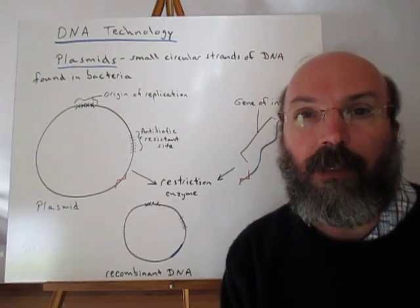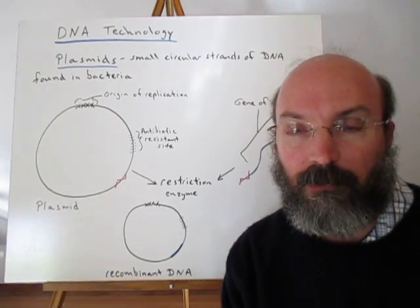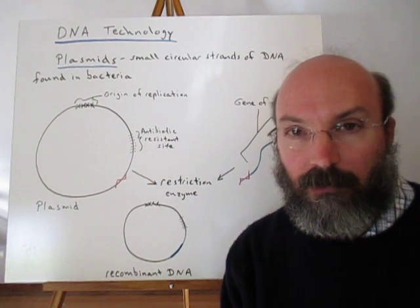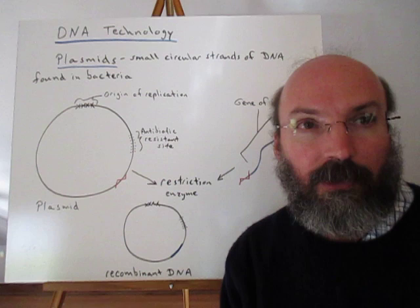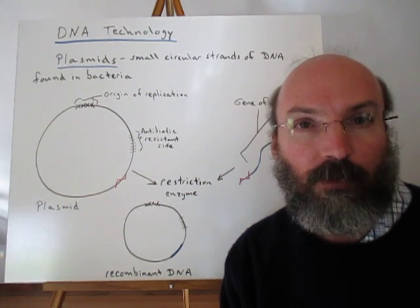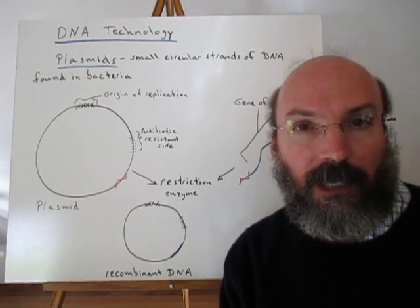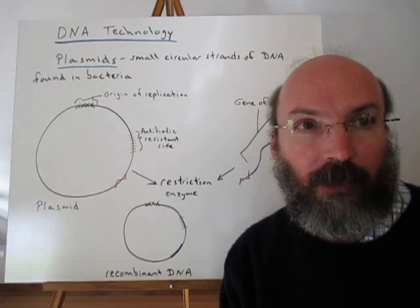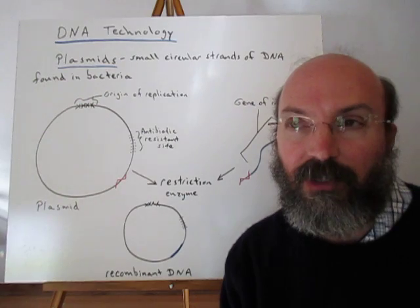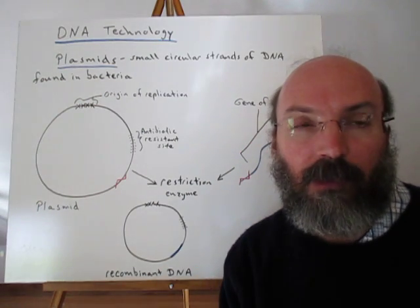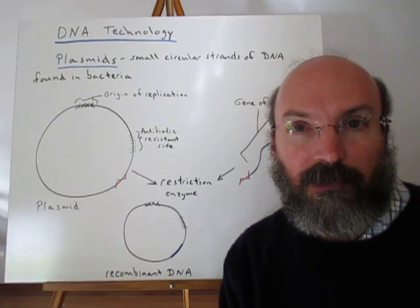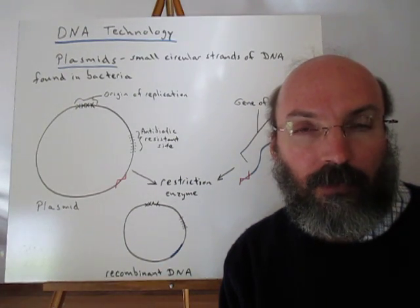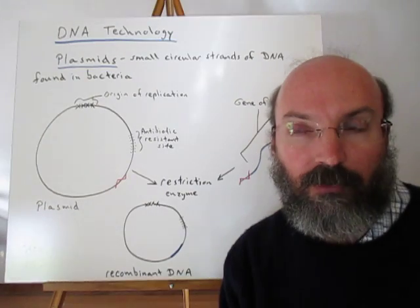Plasmids are circular sections of DNA that are found in bacteria. And these can be broken with restriction enzymes, which will break that plasmid DNA apart at certain sequences of the A, T, C's and G's. That same restriction enzyme can be utilized to break apart the DNA from the organism that you are trying to extract it from.